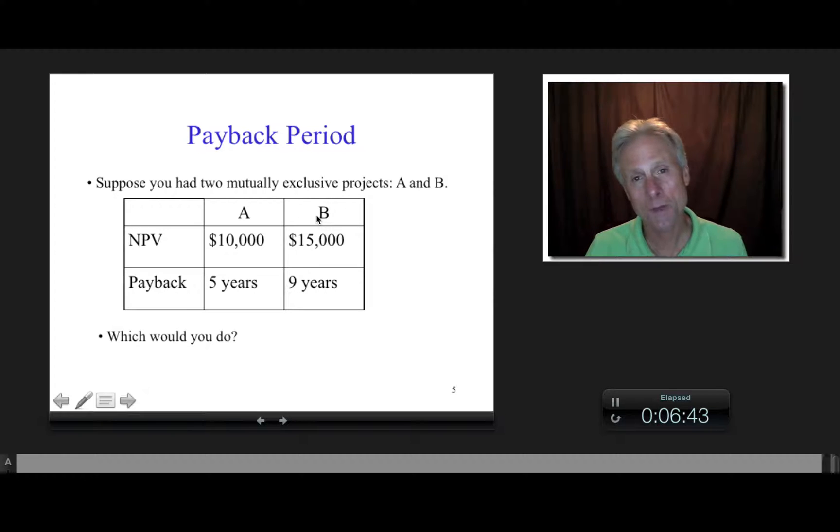So imagine that we have two mutually exclusive projects, A and B. What does that mean? Well, either you do project A, or you do project B, or you do neither. You just don't do both. So for example, if you were going to go maybe buy a car, either you would buy the Honda, or you would buy the Ford, but you wouldn't buy both. So that's what we mean by mutually exclusive. So with project A, NPV $10,000, project B, NPV $15,000. So which one of these is happy face? Well, relatively speaking, B is happy face, and A is sad face, right? For net present value.